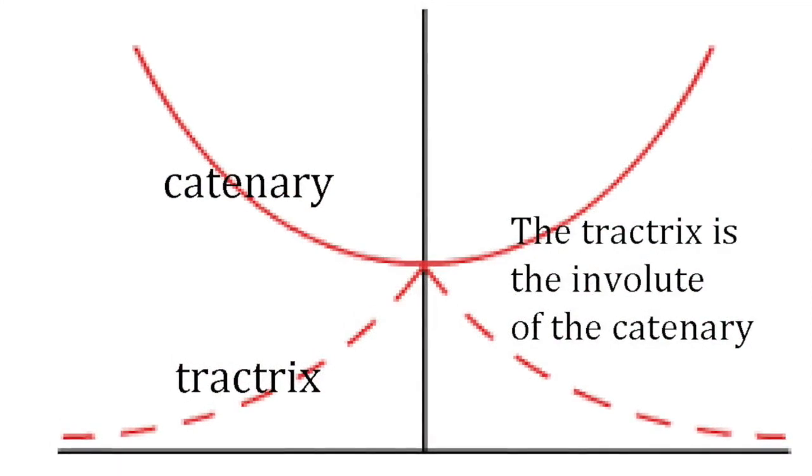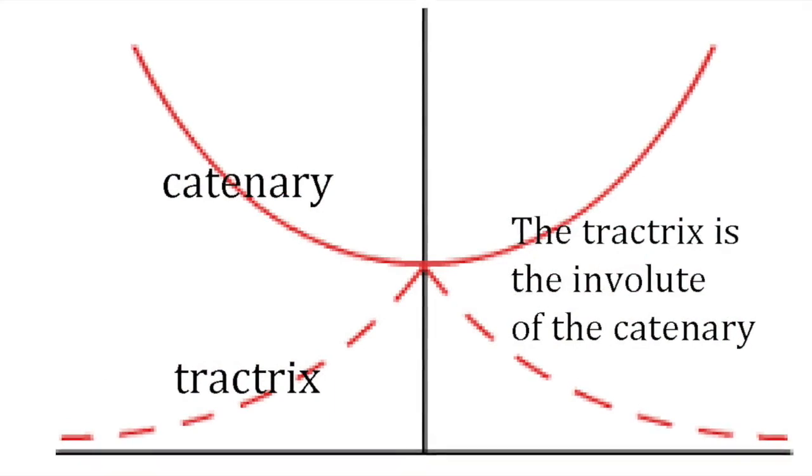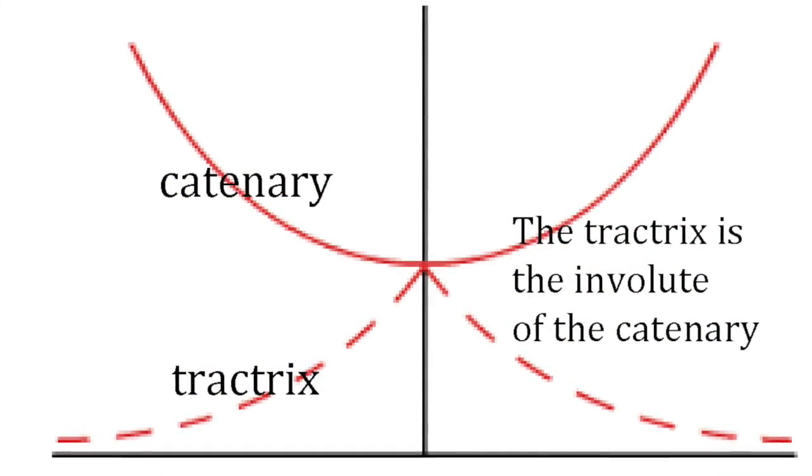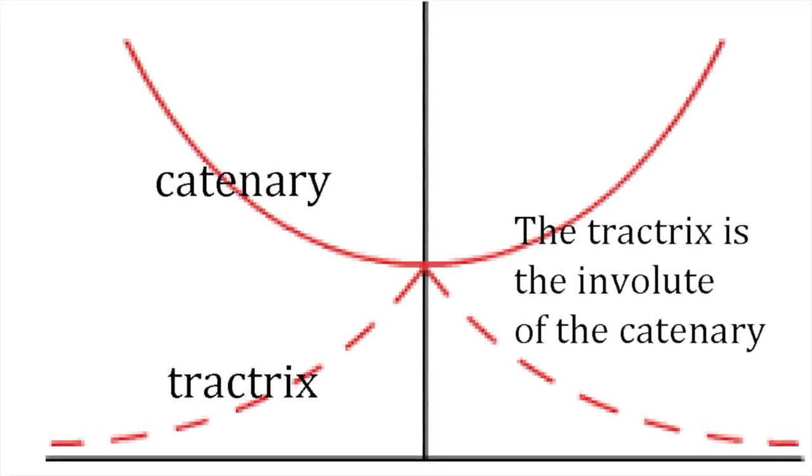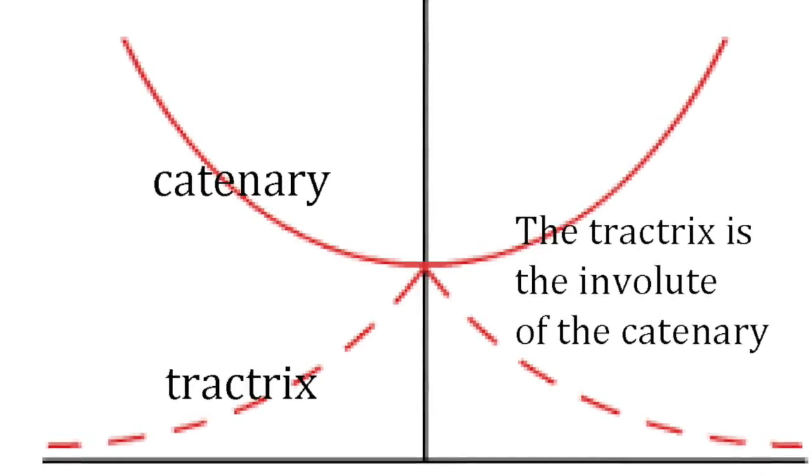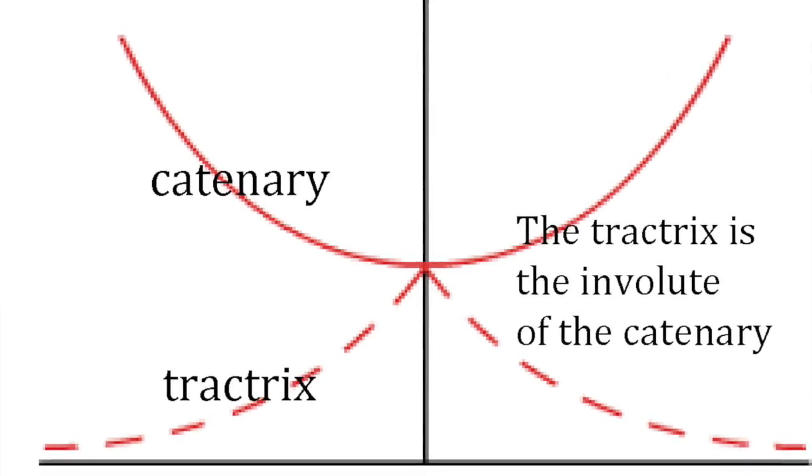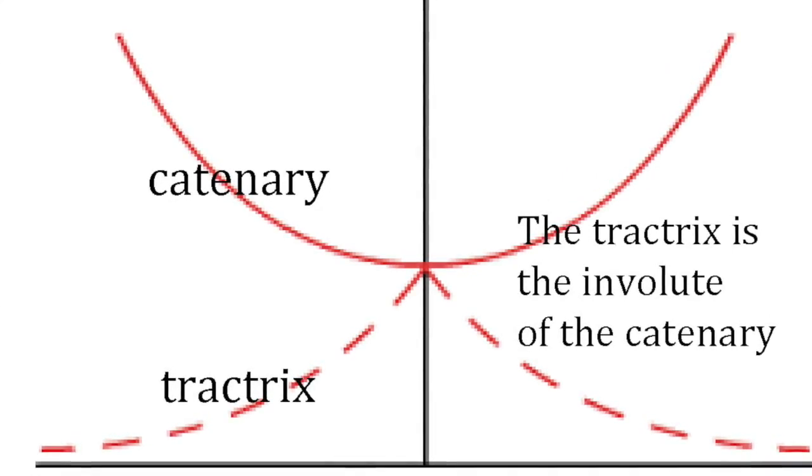Imagine you've fixed a piece of string at one end to a point on the catenary. Pull the string out so that it forms a tangent to the curve where it's attached. Then wind up the string, being careful always to keep it taut. The path followed by the end of the string will be a tractrix.